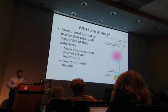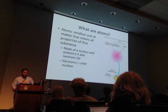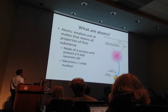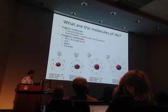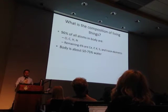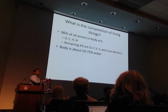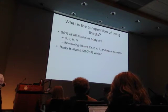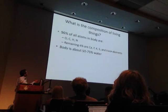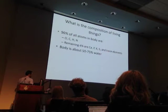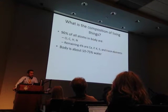At the atomic level, the atom is the smallest unit of matter that retains all the properties of that substance. It's made up of a nucleus with protons and neutrons within it, and electrons orbit the outside. If we look at living things, 96% of all the atoms in the body are made up of four substances: oxygen, carbon, hydrogen, and nitrogen.